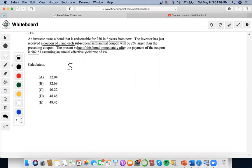So this calls for the bond pricing formula. This whole thing is worth $582.53 and they're saying that we just received the coupon of C and each subsequent semi-annual will be 2% larger than the preceding coupon. So this kind of sets up a geometric increase sort of equation to figure out the present value for the coupon which usually happens here.